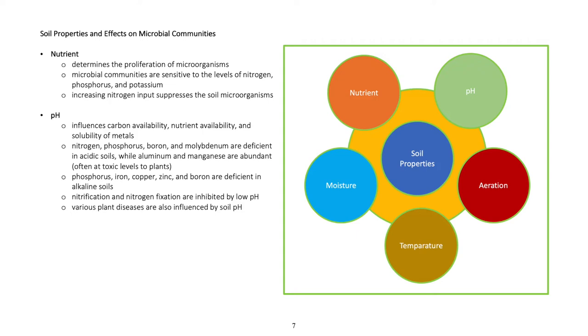pH influences carbon availability, nutrient availability, and solubility of metals. Nitrogen, phosphorus, boron, and molybdenum are deficient in acidic soils, while aluminum and manganese are abundant, often at toxic levels to plants.